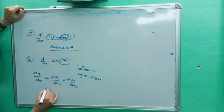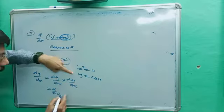d/du of cos u equals minus sin u, and d/dx of x² equals 2x. Substituting back u = x², we get minus sin(x²) · 2x. This is the answer by substitution method.